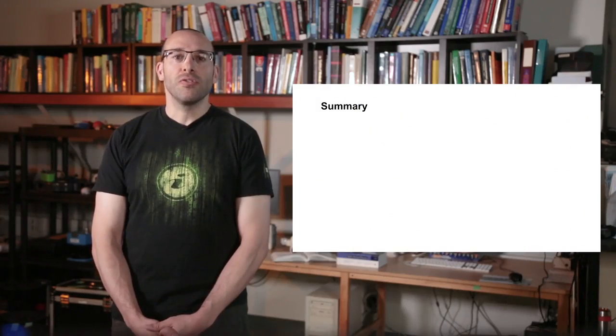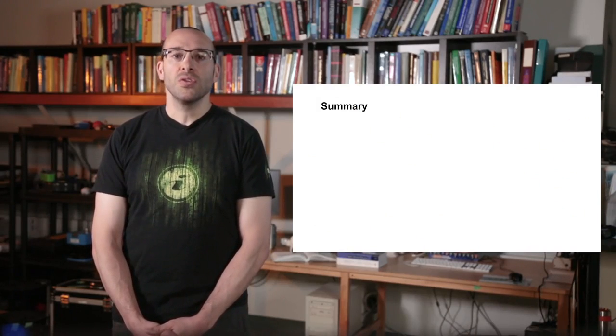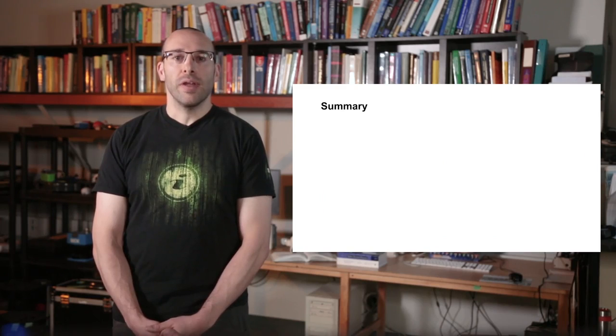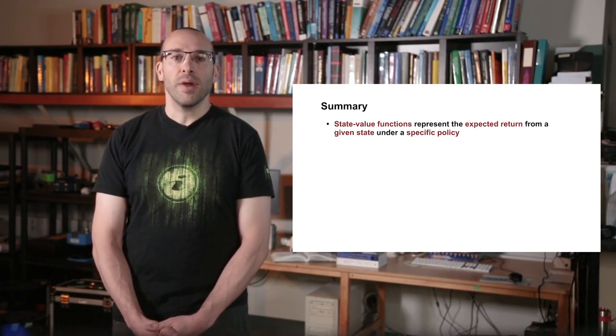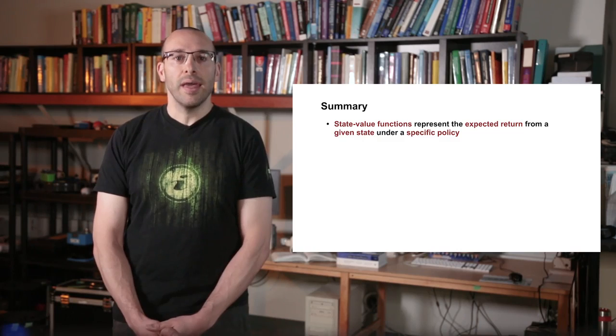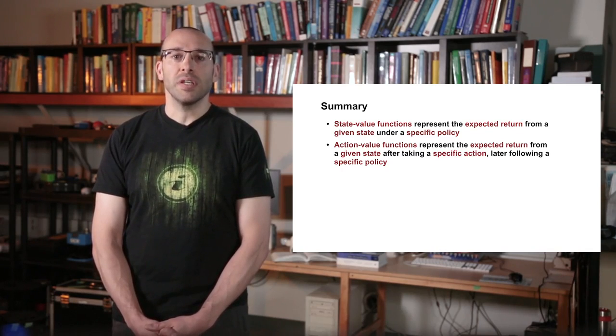In this video, we introduced the definitions of state and action value functions. Soon, we will discuss how value functions can be computed. For now, you should understand that a state value function refers to the expected return from a given state under a specific policy, and an action value function refers to the expected return from a given state after selecting a particular action and then following a given policy.